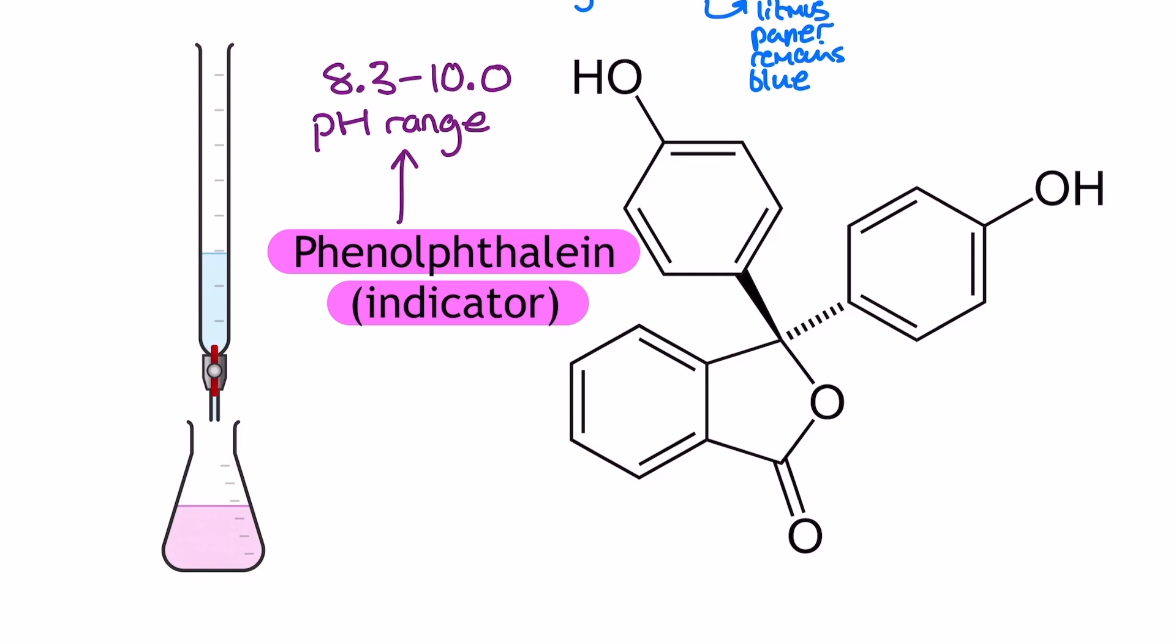We wouldn't usually use an indicator like phenolphthalein outside of this kind of context, as it doesn't really provide any sort of quantity to its suggestion of how acidic or how alkaline a solution is. Other indicators, such as methyl orange and bromothymol blue, for example, have got different pH ranges, and would therefore be more or less suitable depending on your titration.